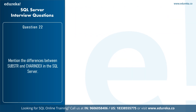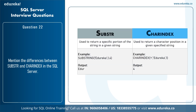The next question is: mention the differences between SUBSTRING and CHARINDEX in SQL Server. SUBSTRING is used to return a specific portion of a string — for example, SUBSTRING('edureka', 1, 4) returns 'edur', starting from position 1 and extracting 4 characters. CHARINDEX is used to return the character position in a given string — for example, CHARINDEX('r', 'edureka', 1) returns 4, because 'r' is at the fourth position in 'edureka'.